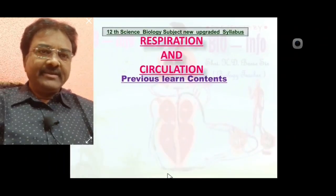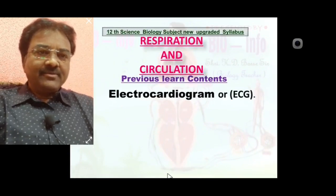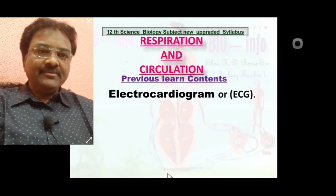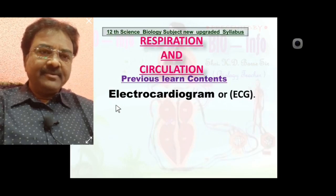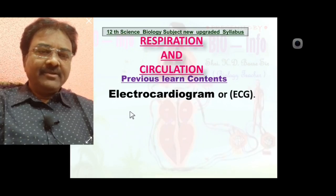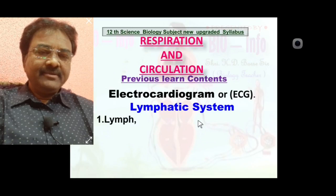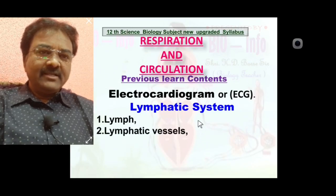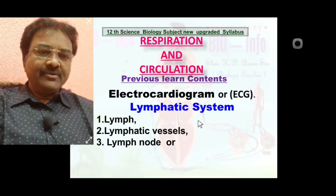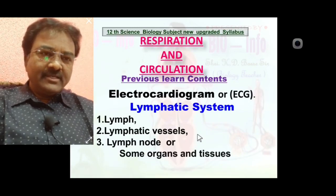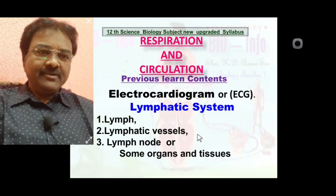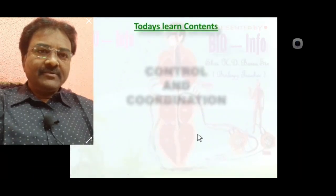In the previous lecture, we learned the respiration and circulation chapter content concept, including electrocardiogram or ECG. ECG is one of the instruments useful for measurement of blood pressure. We also learned that the lymphatic system consists of three components: lymph, lymph vessels, and lymph nodes or some organs and tissue.